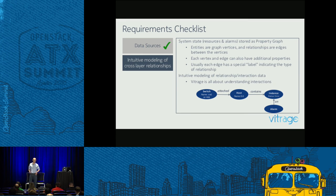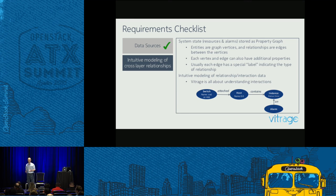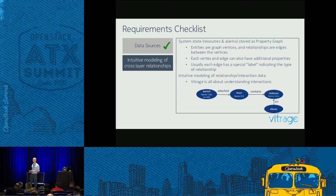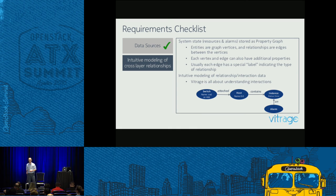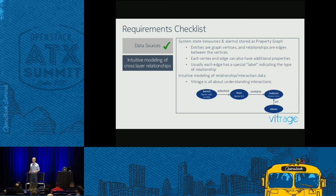The second requirement is intuitive modeling of cross-layer relationships, for which we have the Vitrage graph. The system state is represented as a proprietary graph. The entities are the vertices — each vertex can be either a resource or an alarm — and the edges represent the relationships between those entities. Every vertex and every edge can have additional properties like state, ID, and name. It's very intuitive modeling.